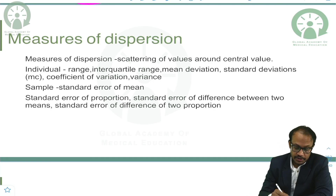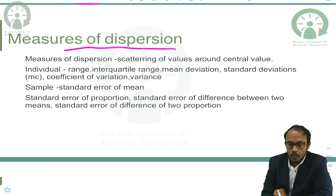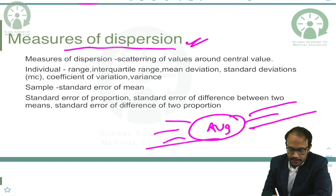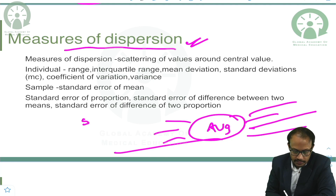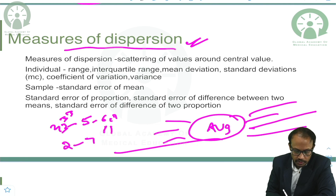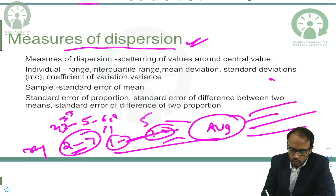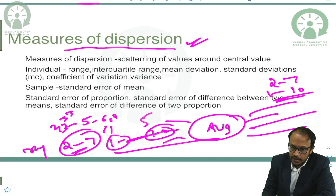Coming on another important topic: measures of dispersion. Basically, we have found out what our average is, what values are around the average, and how much the data is scattered. For example, if the average is five and the values range from two to seven, that range is less scattered than one to ten. One to ten has more range, and two to seven has less range.